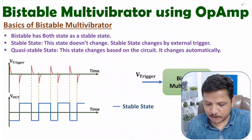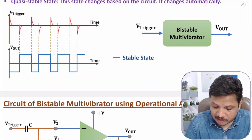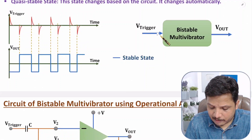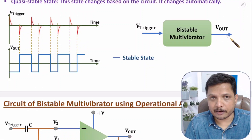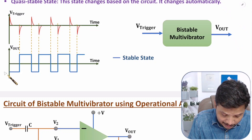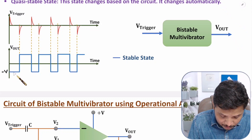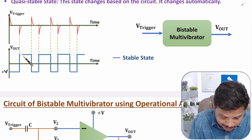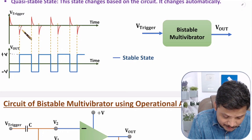Let me explain you how. Here we have a bistable multivibrator in which we give trigger pulse, and based on that only, output will appear. For example, here if we have minus V voltage at output, then to change output from minus V to plus V, we need to give a trigger pulse. If you give a trigger pulse which is a negative going pulse, then straight from minus V to plus V, change will happen.